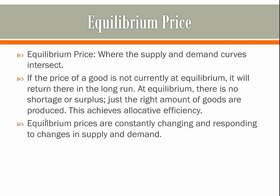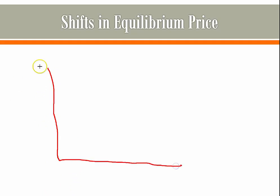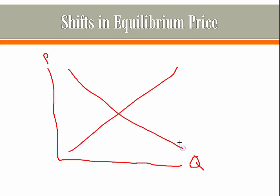However, this equilibrium price is dependent on supply and demand not changing. If either does change, this will change the equilibrium price. So I'm going to draw another supply and demand graph — here's our y-axis, here's our x-axis, price on the y-axis and quantity on the x-axis. This is your supply graph, this is the demand graph, labeled D and S. This is your equilibrium price and equilibrium quantity.